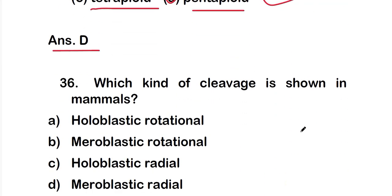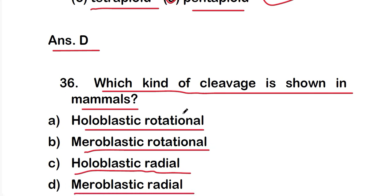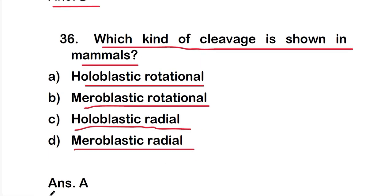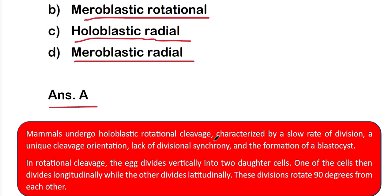Question 36: which kind of cleavage is shown in mammals? Option A: holoblastic rotational; option B: meroblastic rotational; option C: holoblastic radial; or option D: meroblastic radial. The right answer is option A — holoblastic rotational. Mammals undergo holoblastic rotational cleavage characterized by a slow rate of division, unique cleavage orientation, and formation of a blastocyst. In rotational cleavage, one daughter cell divides longitudinally while the other divides latitudinally, rotating 90 degrees from each other.